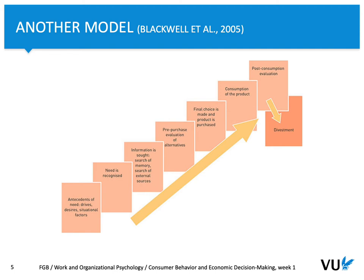It also proposes that before information is sought, a specific need needs to be recognized. It's more psychological — when a person seeks for information, he or she seeks within memory or searches for external sources. They also suggest that before a purchase is made, there is evaluation of alternatives, and this specific phase of evaluation has two parts: pre-purchase and a final choice that is made.